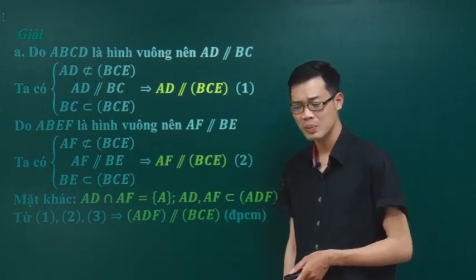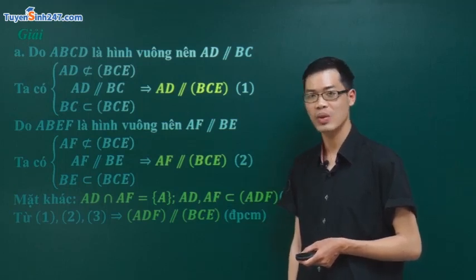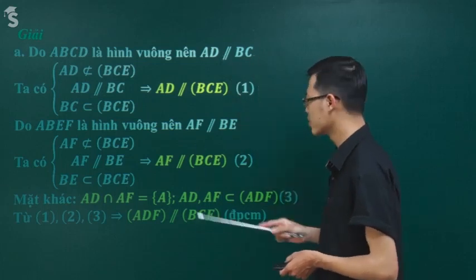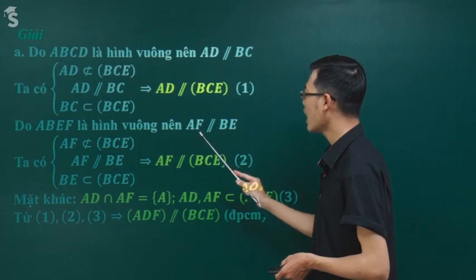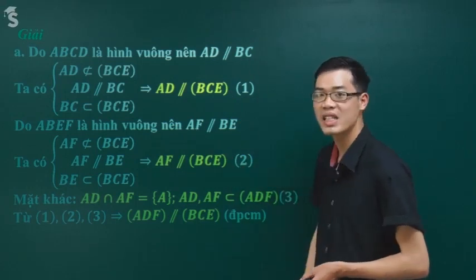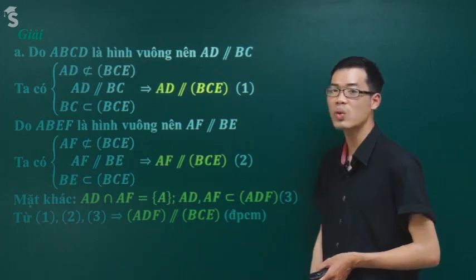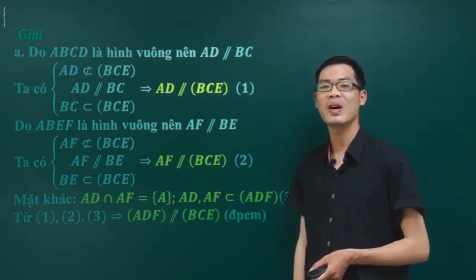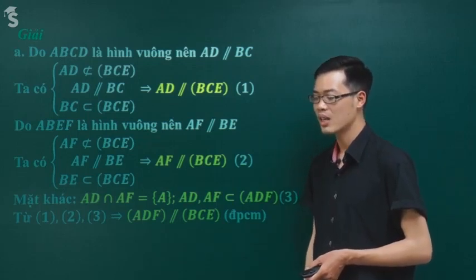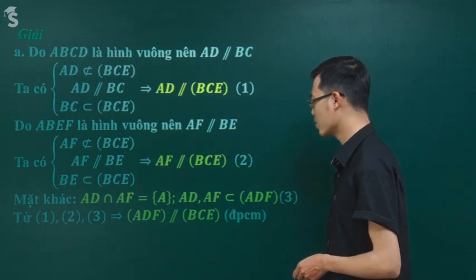Đây là trình bày đầy đủ chi tiết nhất. Trình bày tắt thì mai kia chỉ cần 3 dòng thôi. Bài đầu tiên thầy sẽ trình bày cẩn thận nhất. Sau này các bạn có thể làm tắt đi một tí - không sao cả. Miễn là em hiểu bài rồi là được. Như vậy ý A là xong - điều phải chứng minh rồi.